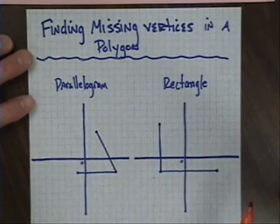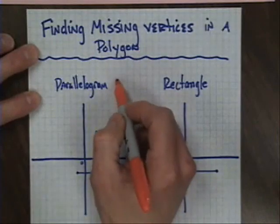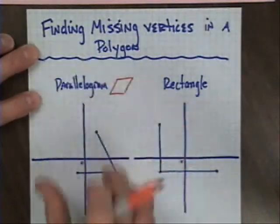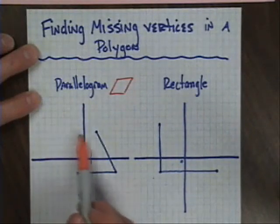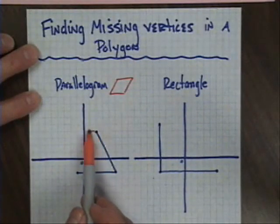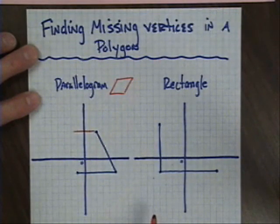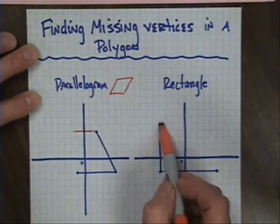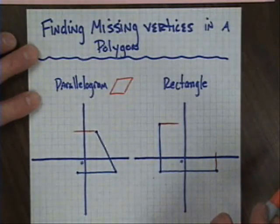As you'll notice, the shapes are not completely filled in. I know that a parallelogram looks approximately like this and can be rotated in any way. I'm thinking that my missing point is up here in this corner somewhere, so that my lines would come across and approximately up at a diagonal. But I don't want to guess — I'd like to be precise. Likewise with a rectangle, I can be sure this is going to come over and come up, but we want to find out where they touch.